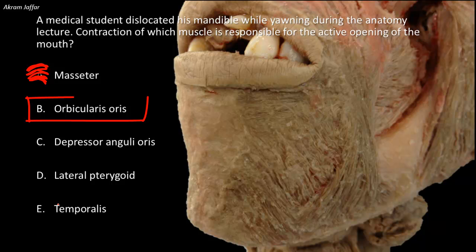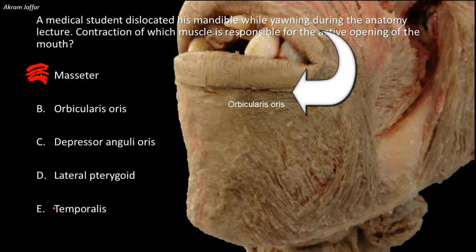Regarding orbicularis oris, this muscle is a muscle of facial expression. It lies within the lips, encircles the mouth, and provides a sphincteric action. The muscle closes the lips and, more powerfully, protrudes them — as in whistling and kissing — puckering the lips.